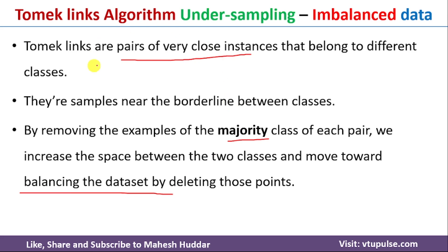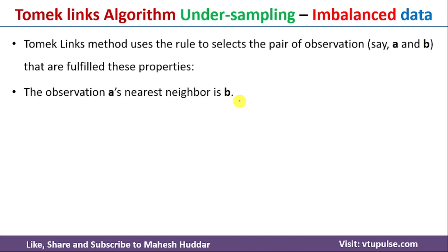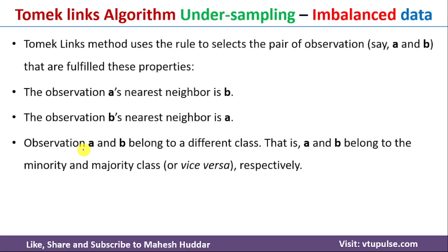The question is how to identify TomekLinks and then how to delete that example. For that we use the following rule: let us say A and B are a close pair of examples. If A is nearest to B and B is nearest to A — meaning A and B are mutual nearest neighbors — and A and B belong to different classes, where A belongs to the minority class and B belongs to the majority class, or vice versa.